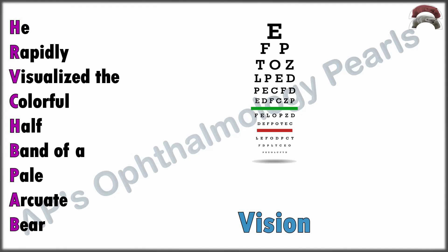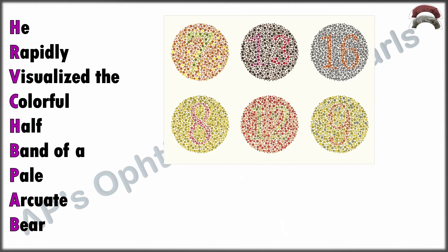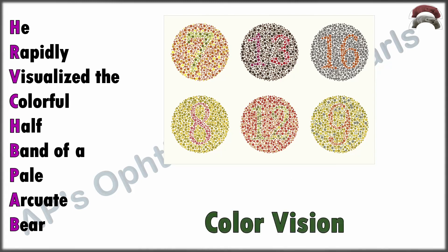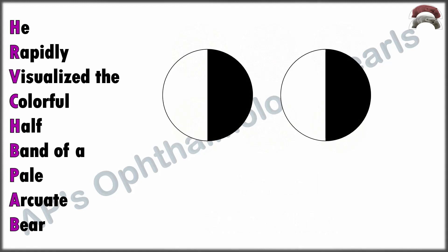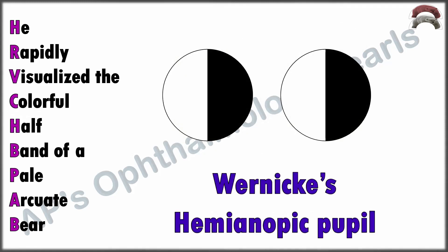'Visualized' represents visual acuity — a pure optic tract lesion has normal vision. 'Colorful' represents color vision, which again is normal. 'Half' represents the vernix hemianopic pupil — one which reacts more briskly to light projected from within the intact hemi-field than to light within the abnormal field.